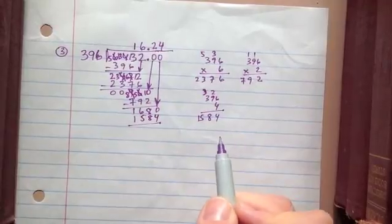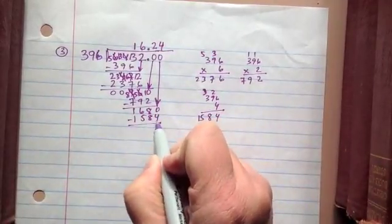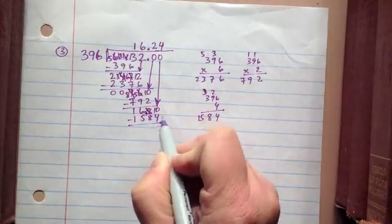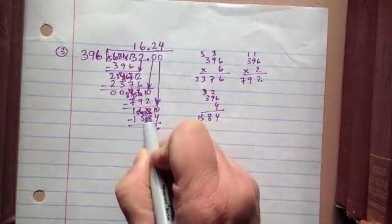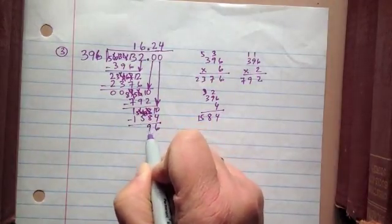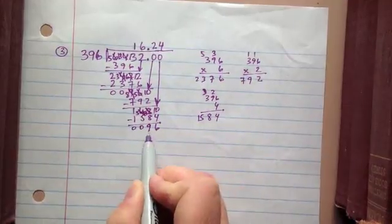And I need to subtract them. So 0 minus 4, can't do, need to borrow a 10, 10 minus 4 is 6, 7 minus 8, need to borrow a 10, 17 minus 8 is 9, 5 minus 5 is 0, 1 minus 1 is 0. Okay, I have 96.